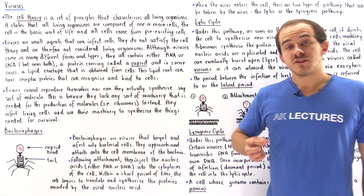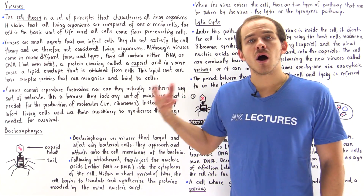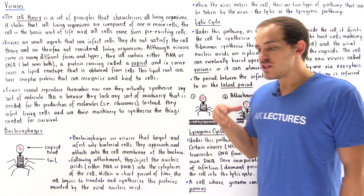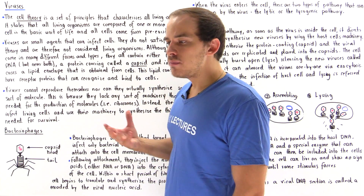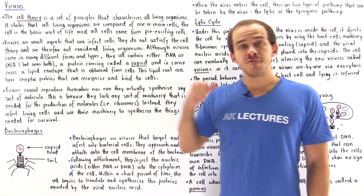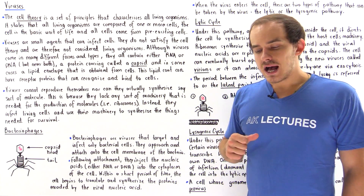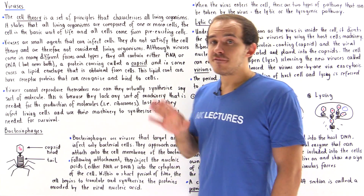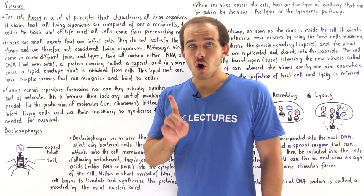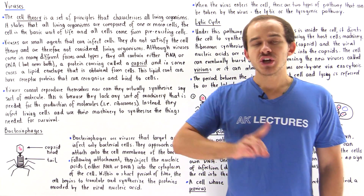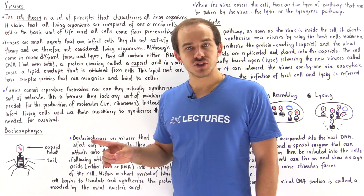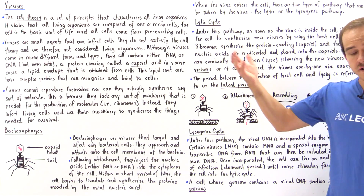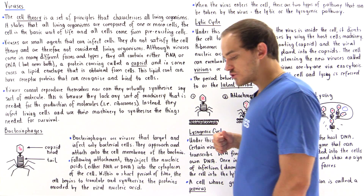The cell theory also states that cells arise from other pre-existing cells, meaning that living cells can replicate and reproduce to form other cells. The focus of this lecture will be viruses, which are basically small agents that infect other cells, including animal cells, plant cells, and all different types of other cells.